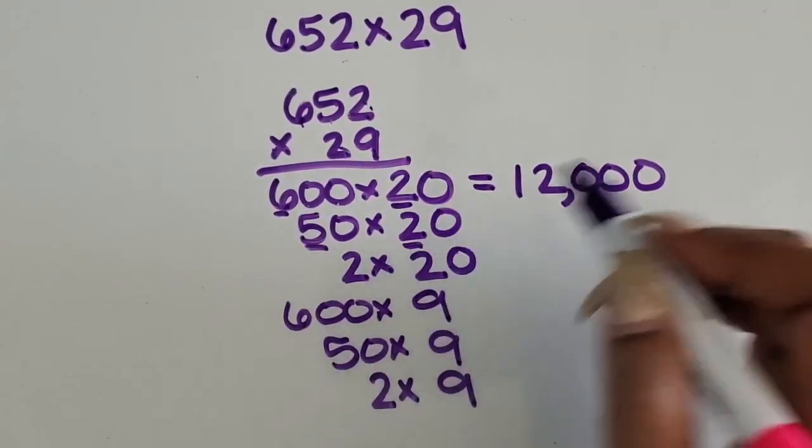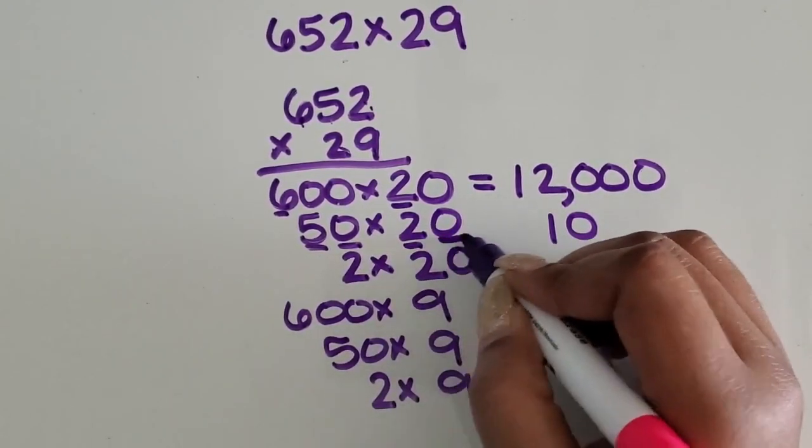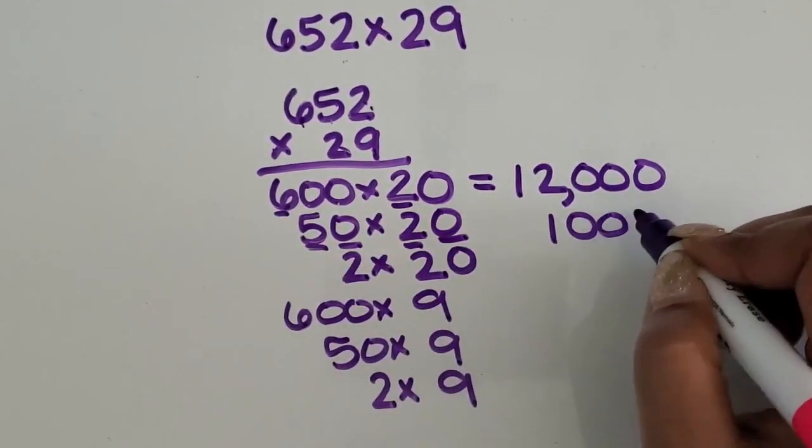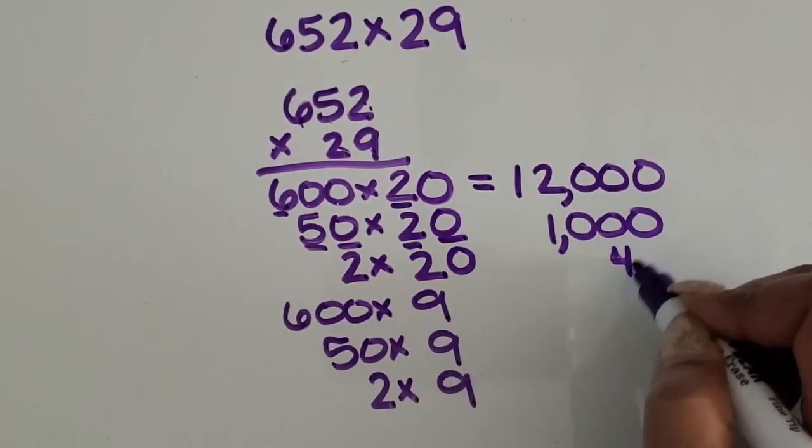We have 5 times 2 is 10, and then I have 2, 0s. So that's going to be 100 times greater, or 1,000. And then 2 times 20 is 40.